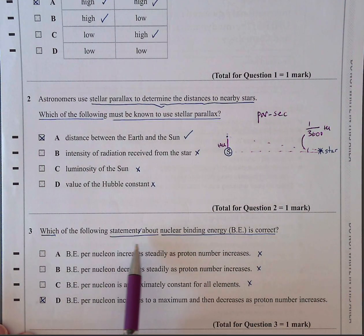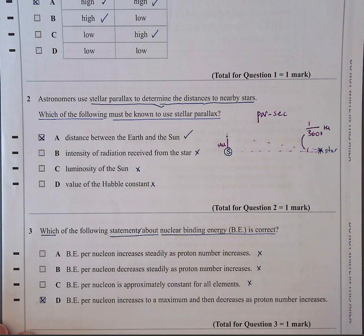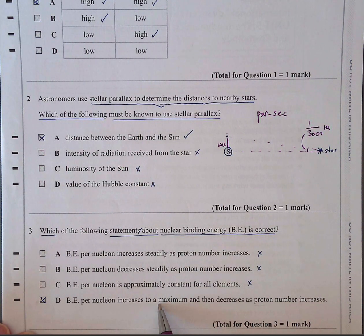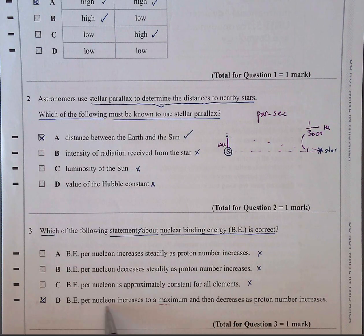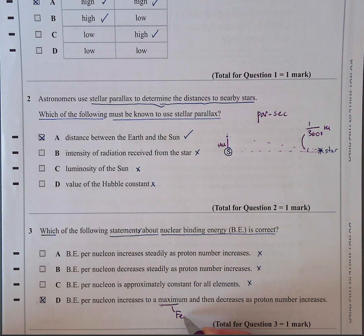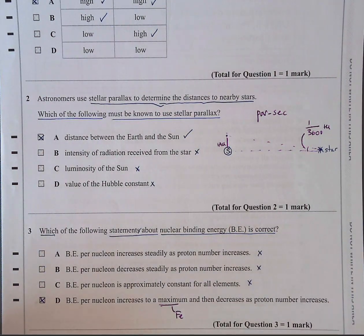Question three, which of the following statements about nuclear binding energy is correct? The answer is D, binding energy per nucleon increases to a maximum, that will be where iron is, and then decreases as the proton number increases. So binding energy per nucleon is a way of comparing nuclei based on their size. So you divide the binding energy, which is how much energy you require to basically separate it into its constituent nucleons. And the one that has the highest binding energy per nucleon is the most stable. And the most stable is iron. So iron is the most stable nucleus. So this is just something you need to revise. So binding energy and binding energy per nucleon are different, so make sure you revise that.